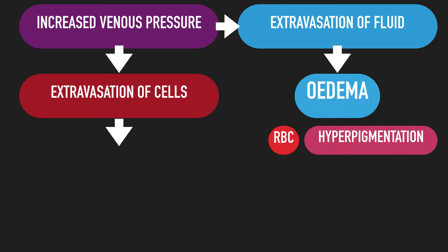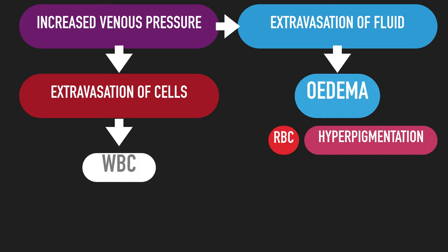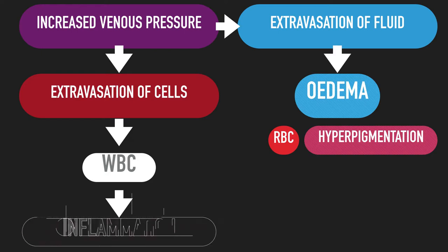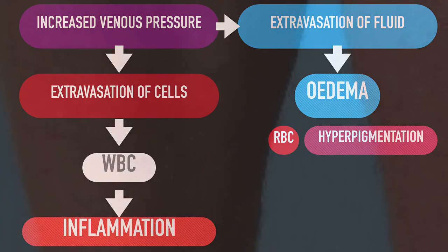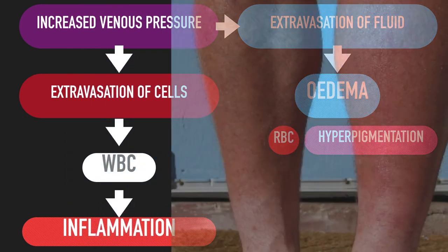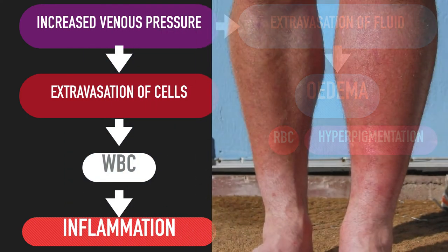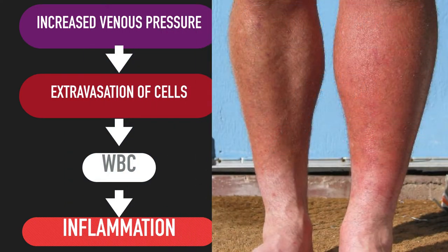When white blood cells leak into the tissue, it contributes to localized inflammation around the veins. This can expand to include a larger area of the limb, associated with pain, redness or erythema, more swelling or edema, and an increase in temperature.